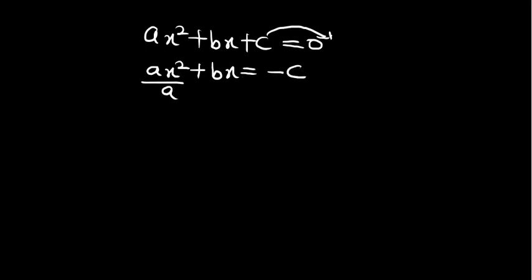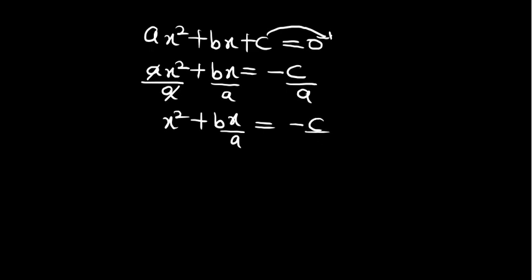We divide both sides by a. We are now having x² plus bx over a equals minus c over a.